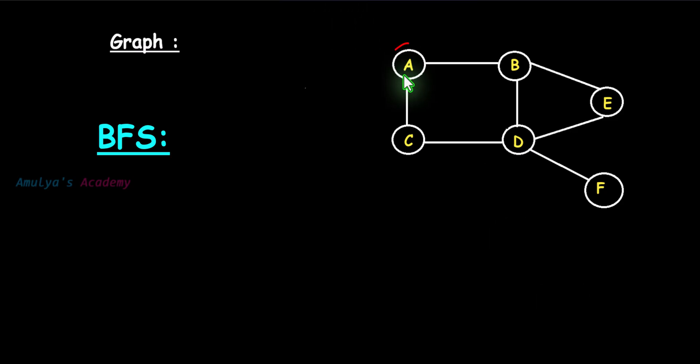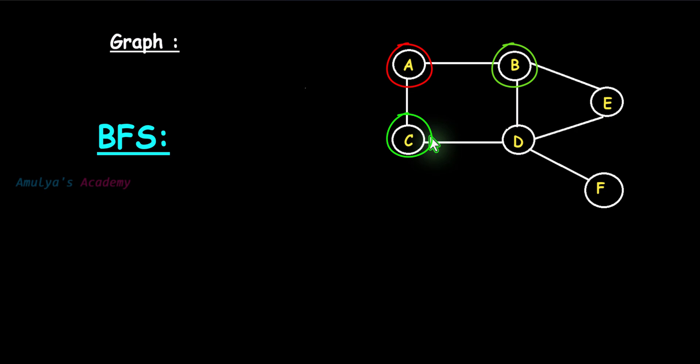The first step is to choose the starting node and visit it. The second step is to visit all the unvisited nodes connected to the starting node — that is, visit all the adjacent nodes of the starting node. Here, B and C are the adjacent nodes of A, so visit them.